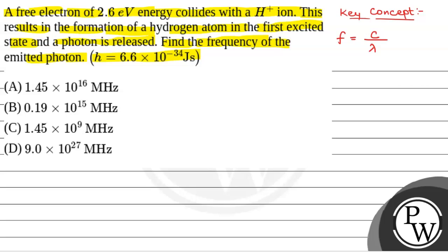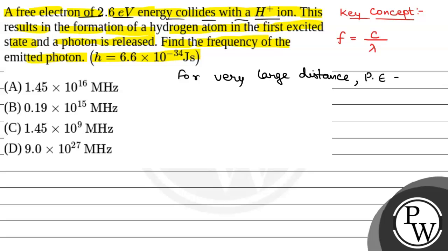We have been given a free electron of 2.6 electron volt colliding with a H plus ion. Now, for very large distance, the potential energy is equal to 0. So the total energy will be equal to 2.6 electron volt.